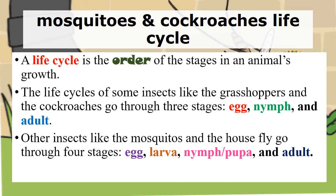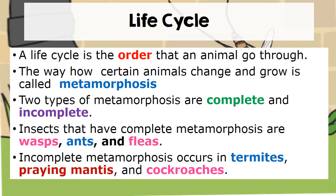Other insects, like the mosquitoes and the housefly, go through four stages: the egg, the larva, the nymph — sometimes called the pupa — and adult. A life cycle is the order that an animal goes through.